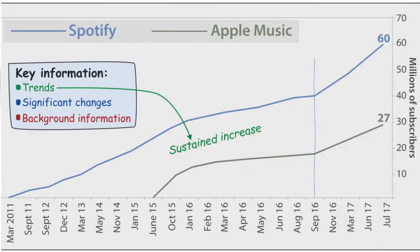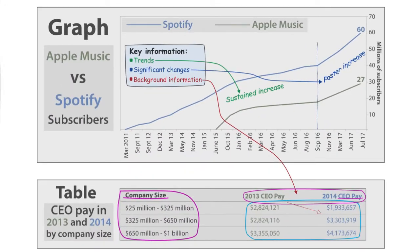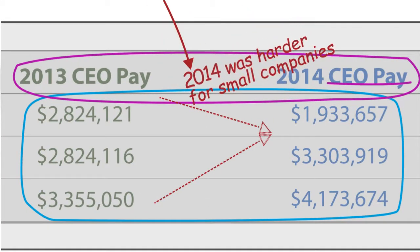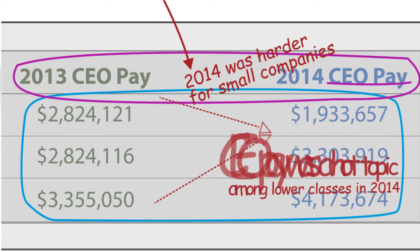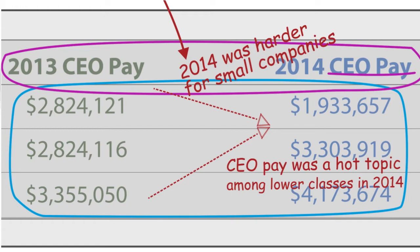However, their subscriptions have been growing at an even faster rate ever since September 2016. And over here, it would be important to point out that CEO pay in smaller companies actually decreased by almost $1 million, whereas for larger companies it grew. This might have been because 2014 was a harder year for smaller companies, or because CEO pay was a hot topic among the middle and lower classes in 2014, and it was a lot easier for them to demand changes in smaller companies rather than in big ones.